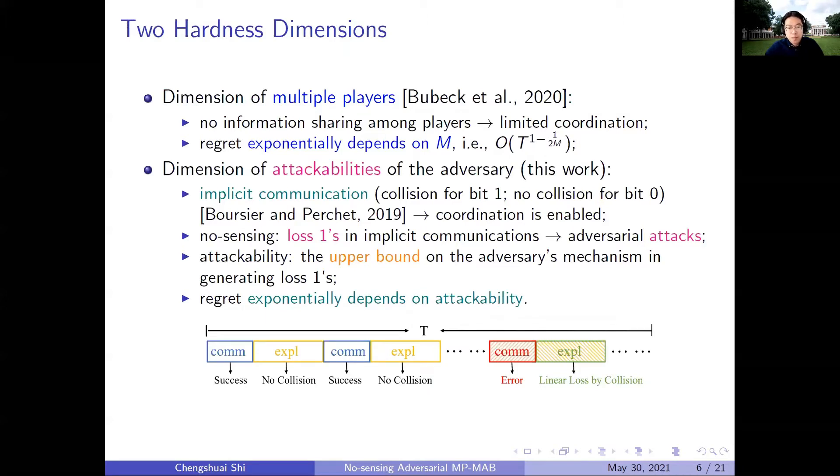That's when the number of players increases, it becomes harder and harder to get low regret, which results in that its regret result has an exponential dependency on M, which is the number of players. In this work, we take another path to incorporate implicit communication, which uses collision or not to transmit one bit of information between the players. However, as I just mentioned before, in the no-sensing setting, loss 1 can come indistinguishably from collision or from the adversary. Thus, it can be a tool for the adversary to attack the implicit communication.